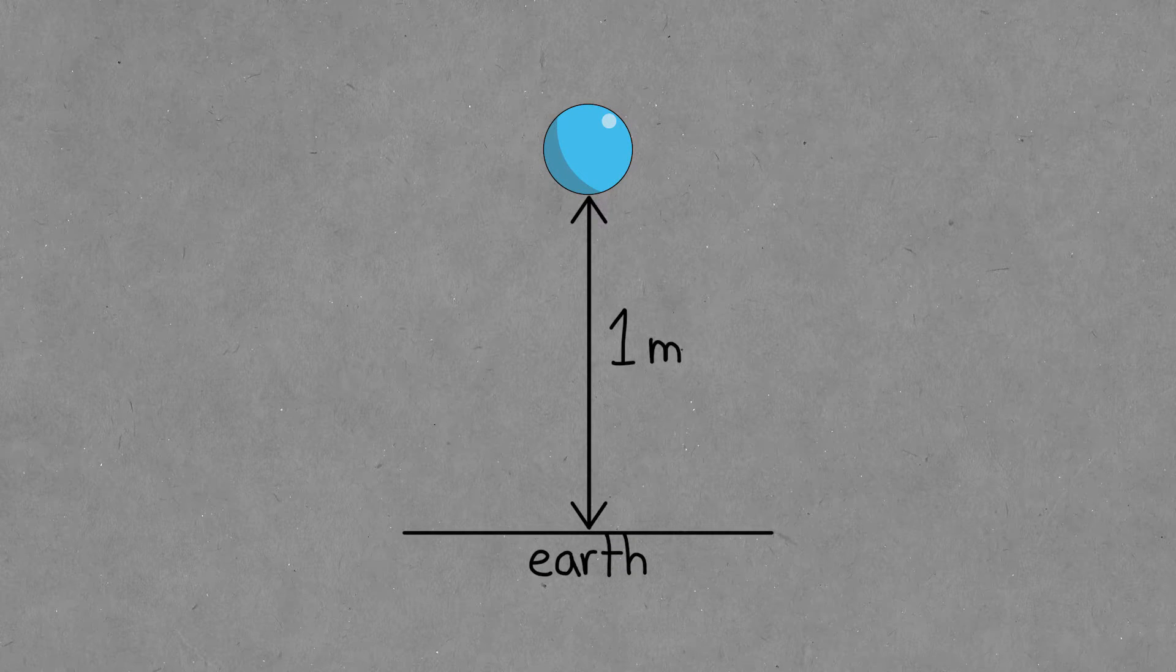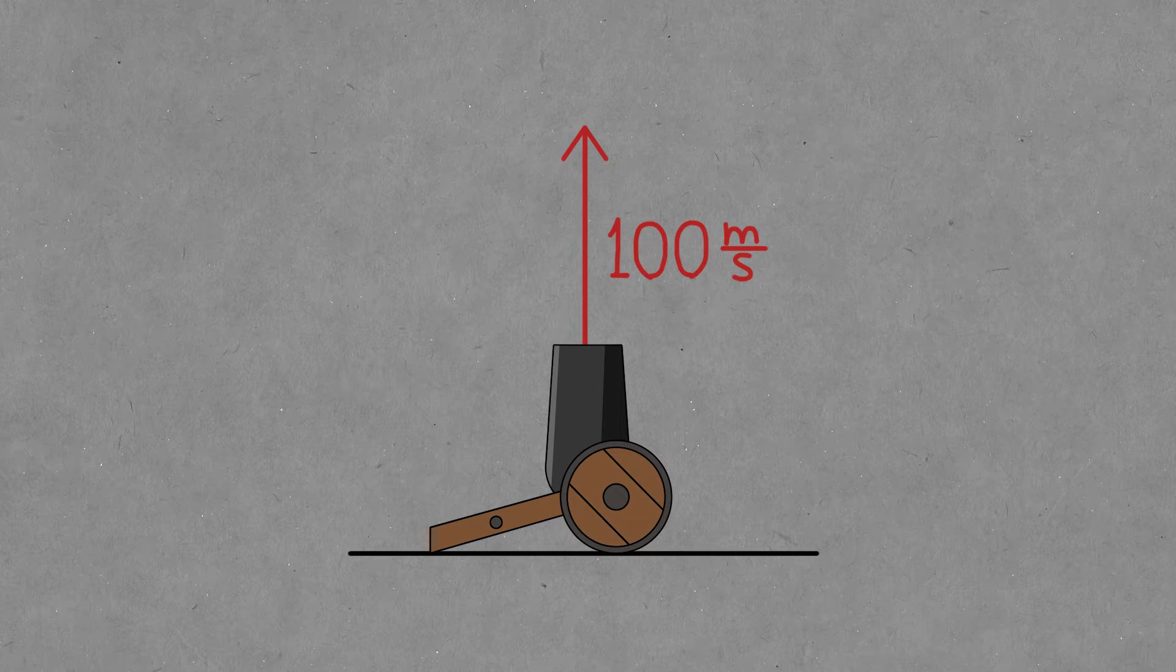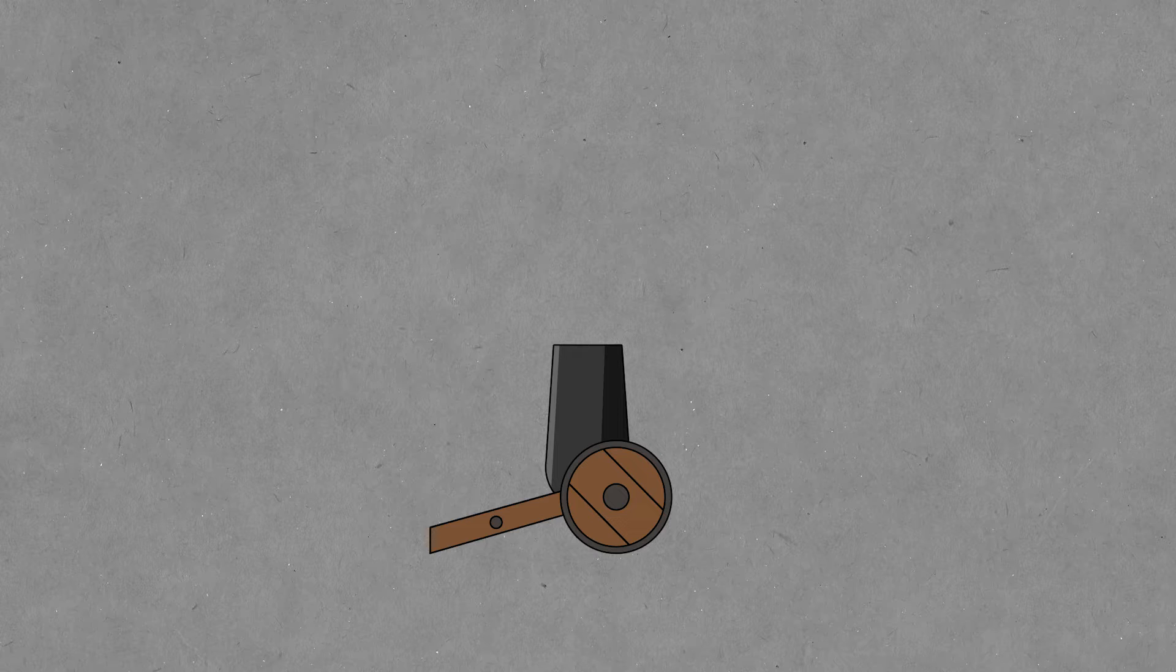How long will it take this ball to hit the ground? About 0.45 seconds. How high will this cannon shoot? About 510 meters. But as that cannon gets more and more powerful, weird things start to happen.